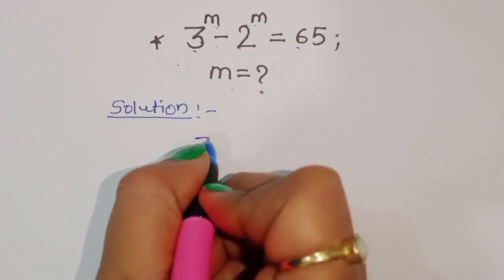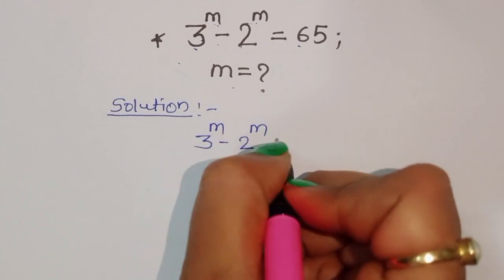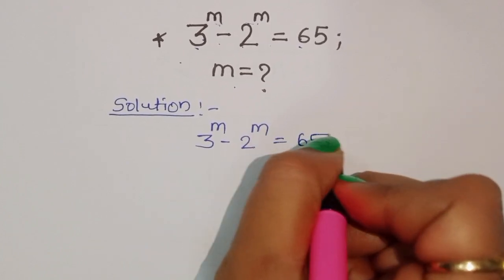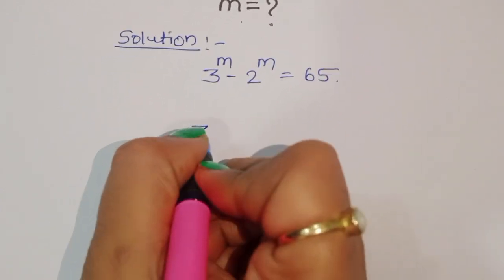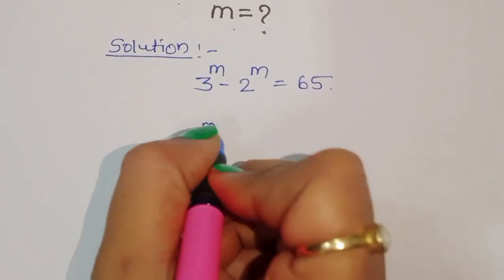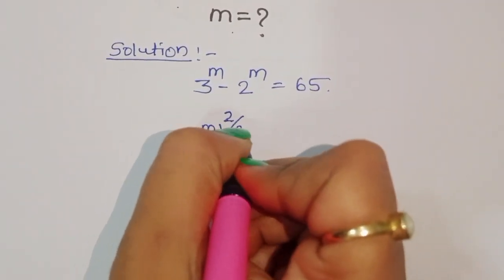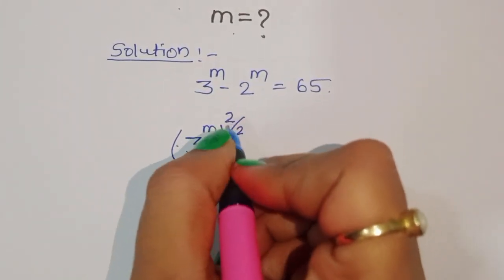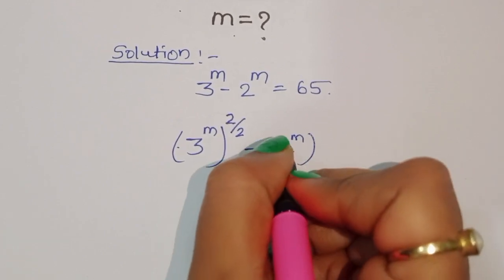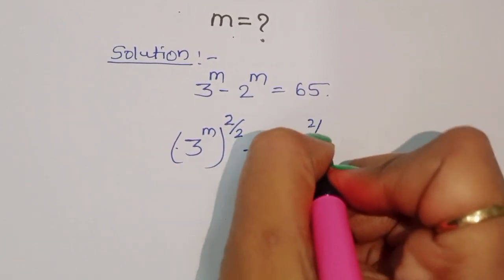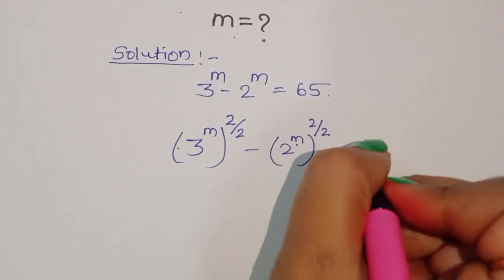First, what is given: 3 power m minus 2 power m is equal to 65. Now we can rewrite 3 power m by taking the exponent as 2 divided by 2, and similarly 2 power m with exponent 2 divided by 2. Since 2 divided by 2 equals 1, the value is the same, so this equals 65.